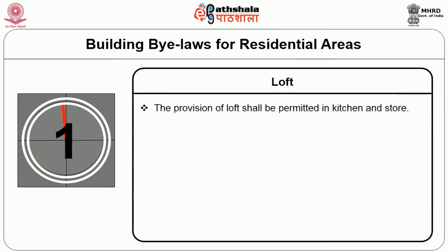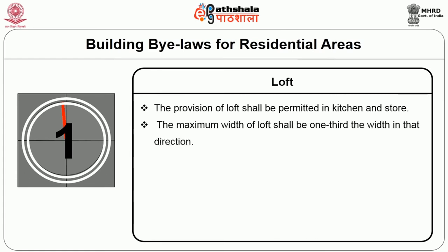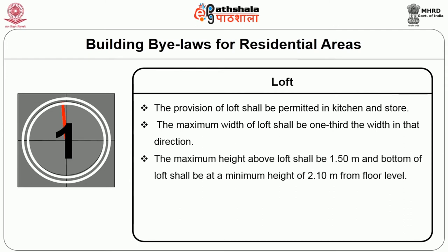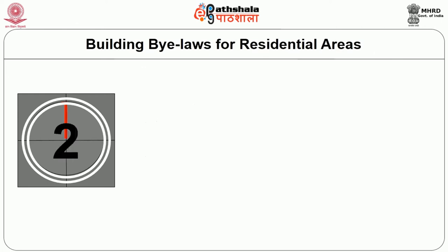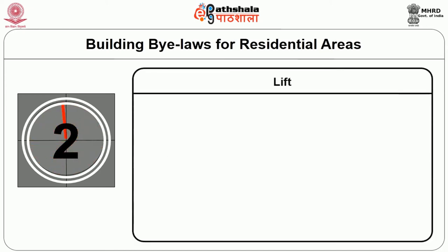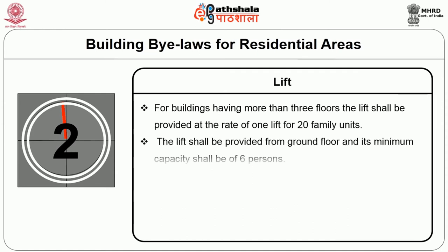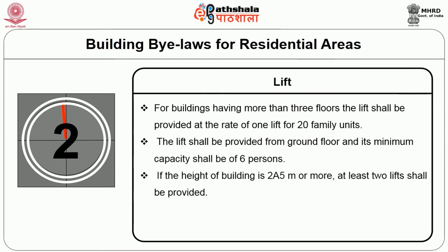Loft: provision of a loft shall be permitted in kitchen and store room. The maximum width of the loft shall be one-third the width in that direction. The maximum height above the loft shall be 1.5 m and the bottom of the loft shall be at a minimum height of 2.1 m from floor level. Lift: for buildings having more than 3 floors, lifts shall be provided at the rate of 1 lift per 20 family units, provided from the ground floor with minimum capacity of 6 persons. If the height of the building is 25 m or more, at least 2 lifts shall be provided.